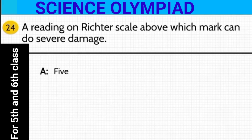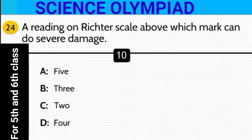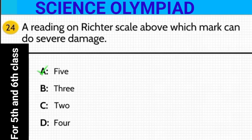Reading on the Richter scale above which mark can do severe damage? The Richter scale is used to measure the intensity of an earthquake. The answer is five — readings above five on the Richter scale can do severe damage.